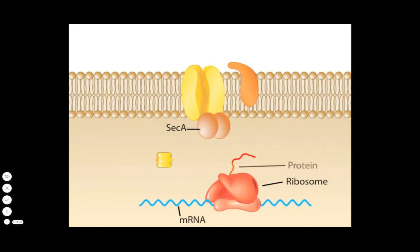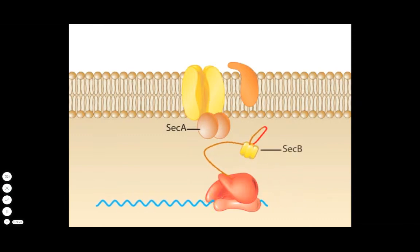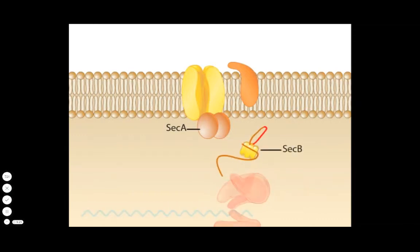First, the protein is translated in the cytoplasm. The pre-secretion protein is captured by a piloting protein called SecB. SecB binds to the unfolded protein and helps to keep it in an unfolded state, which will make secretion through a membrane much easier than if it has a chance to fold.